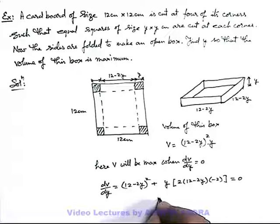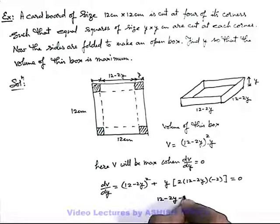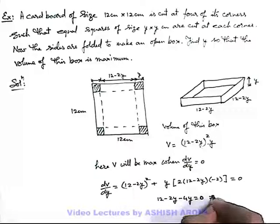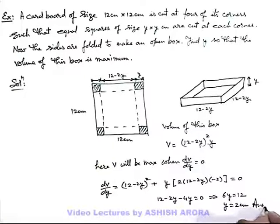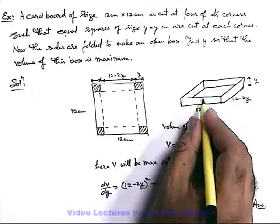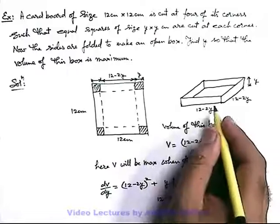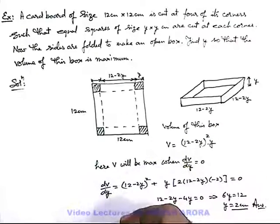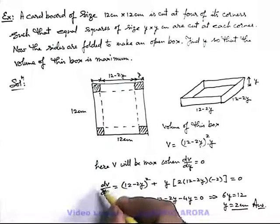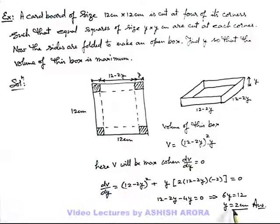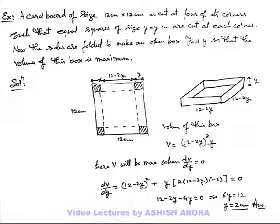On solving this expression, we get 12 minus 2y minus 4y equals zero, which implies 6y equals 12, hence y equals 2 centimeters. At y equals 2 cm, the volume of this box is maximum. You can verify this using the second derivative check — at y equals 2, d²V by dy² comes out to be a negative quantity, confirming a maximum.